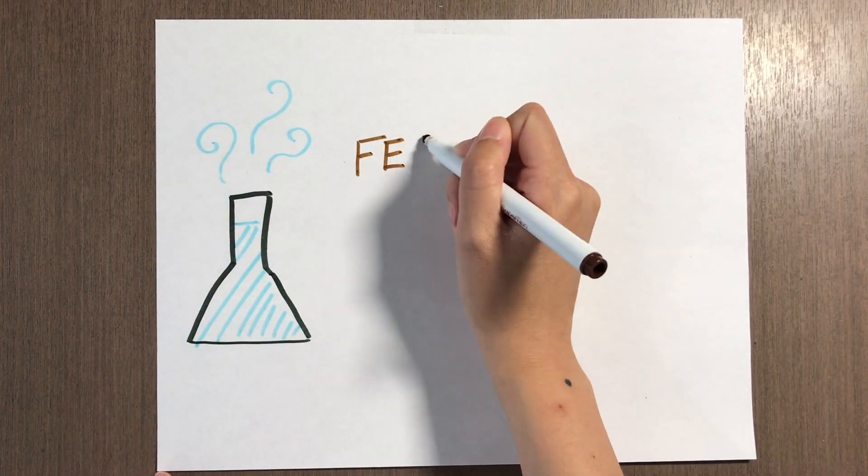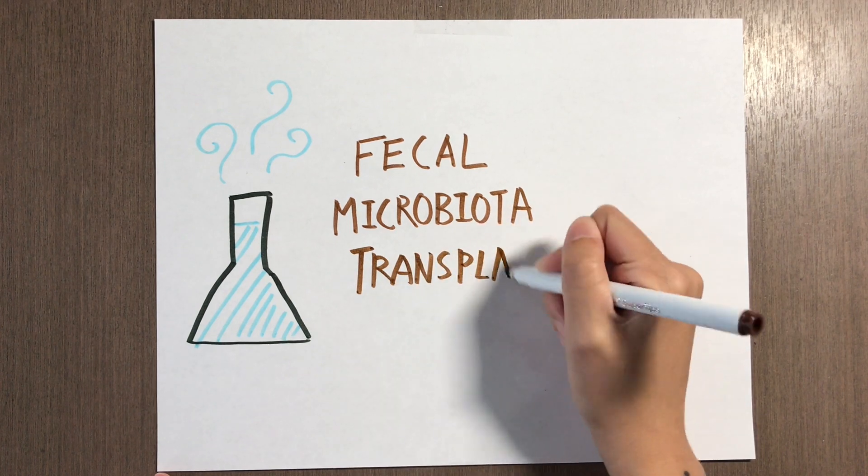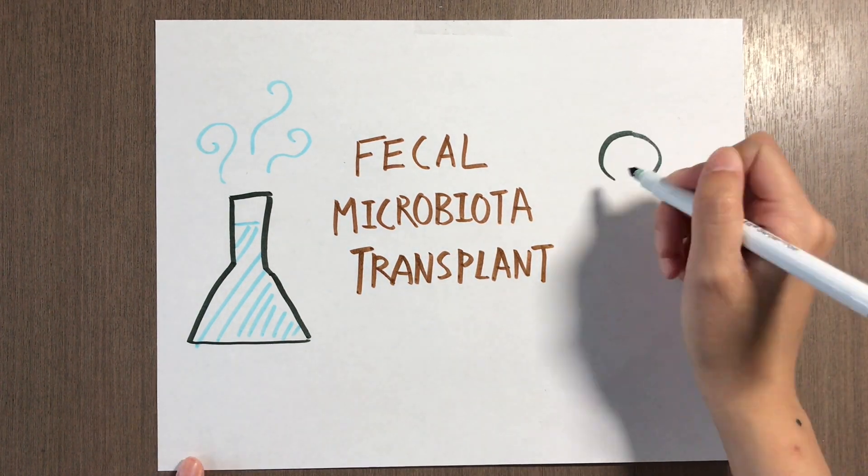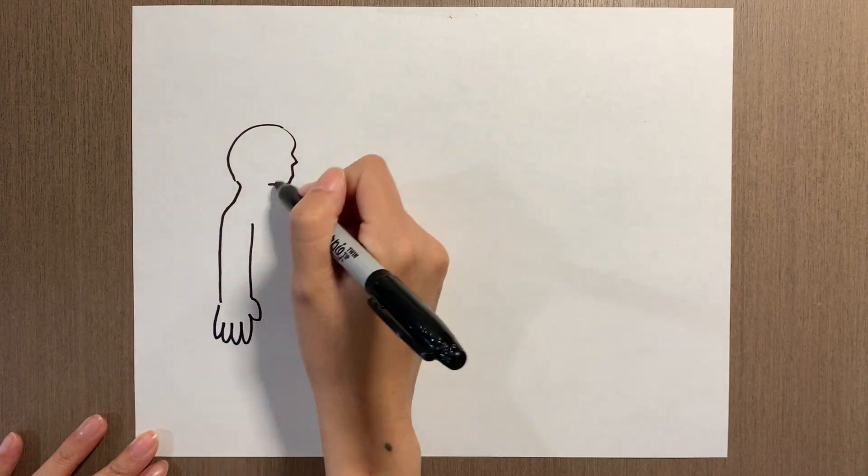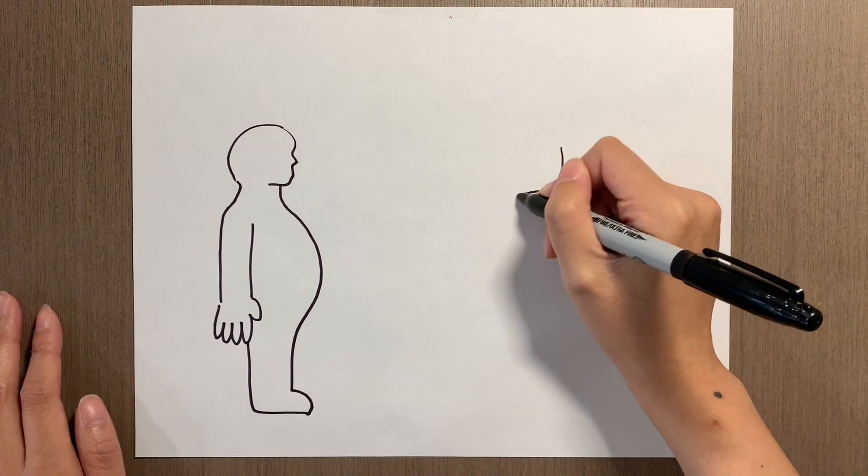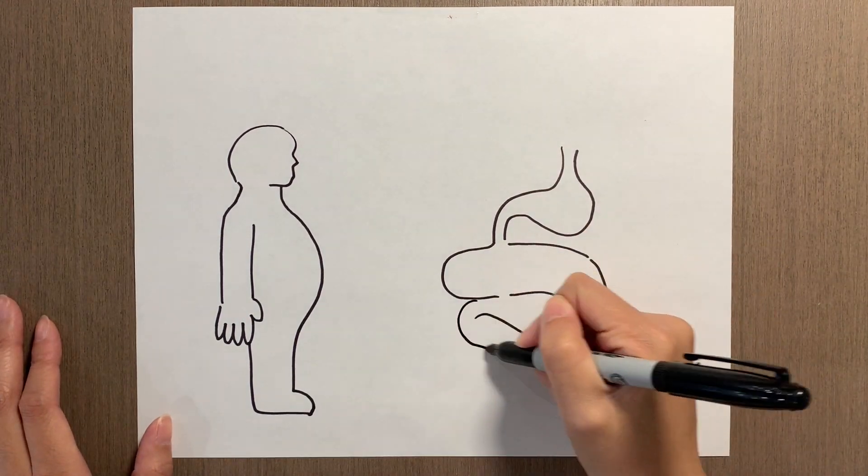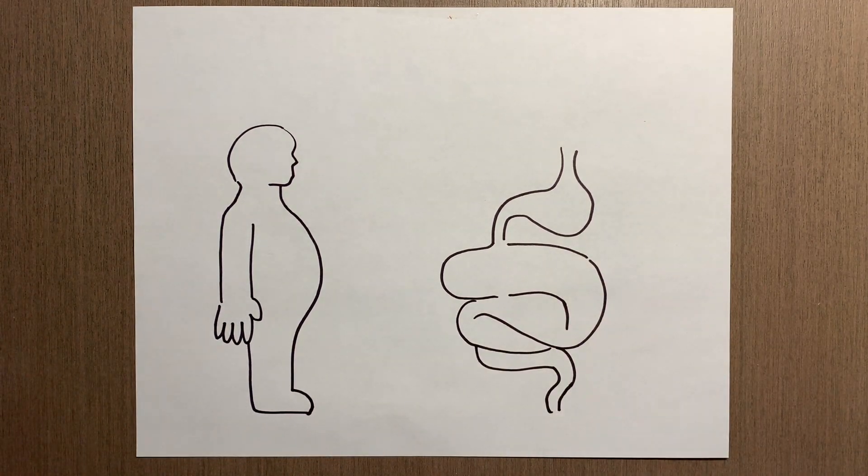that fecal microbiota transplants, or FMT, can be a plausible way through which we can treat obesity. Before we talk about what an FMT is, let's talk about what obesity and the gut microbiota are and what the connection between them is, so we can better understand what the fecal transplant does to your body.